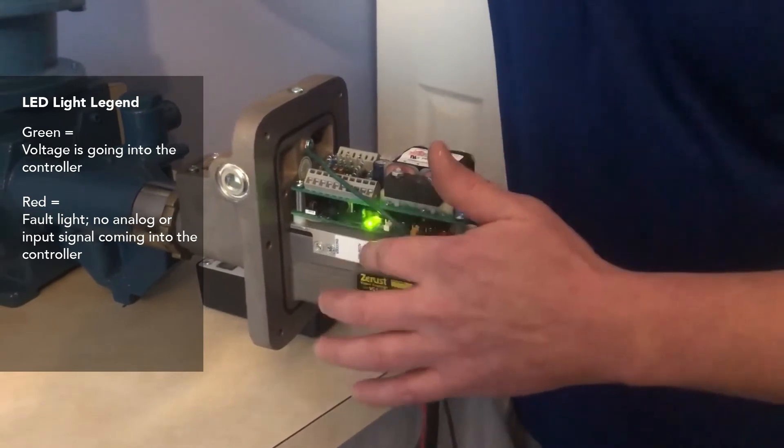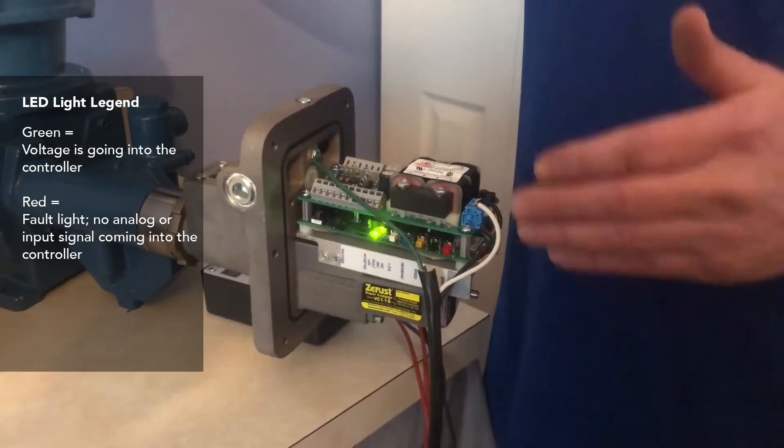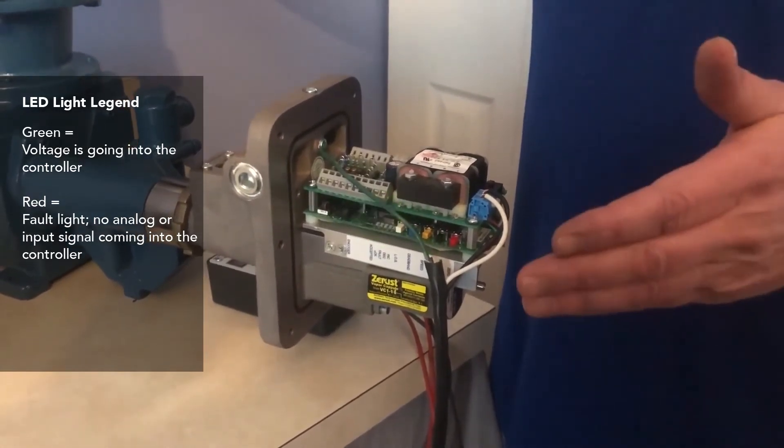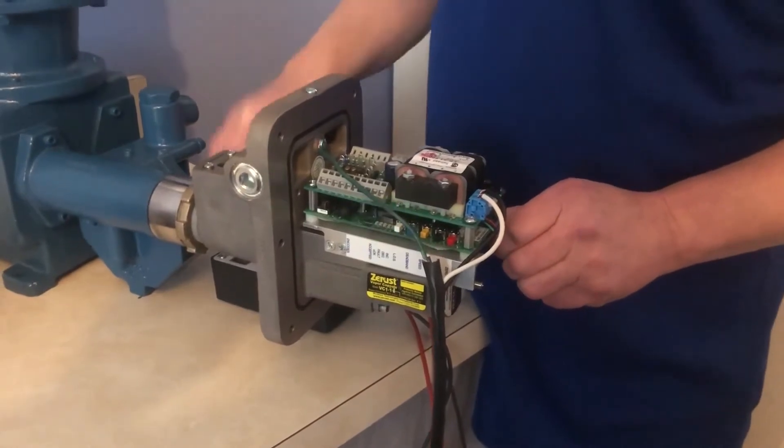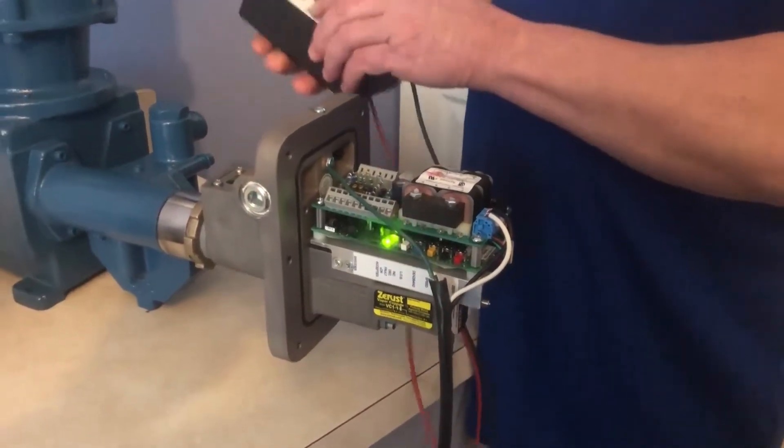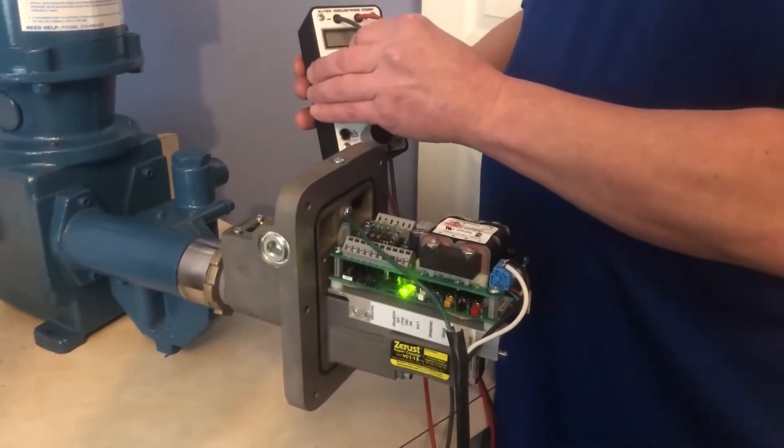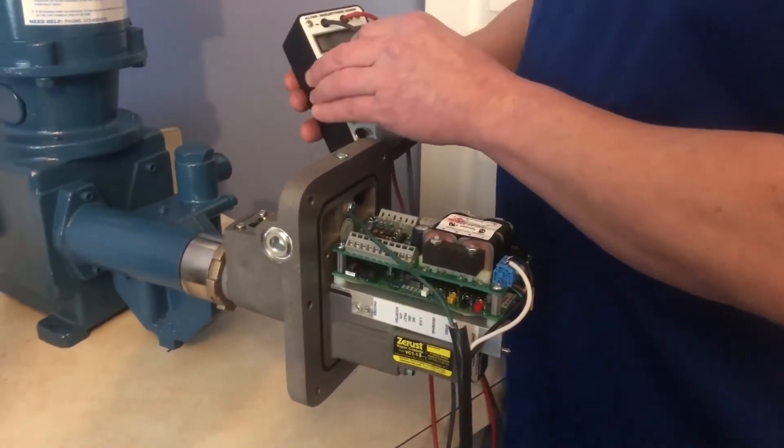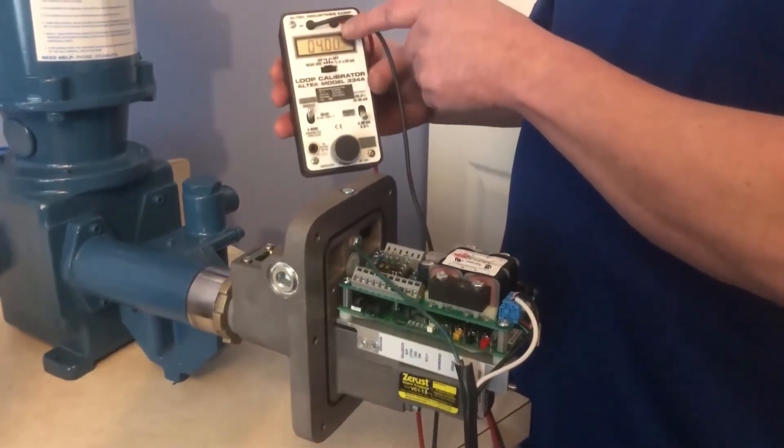The red LED is a fault light, which typically means there's no analog or input signal coming into the controller. Now, when I get the simulator out and simulate a signal, that red light should go off. The red light went off. And we have a four milliamp signal.